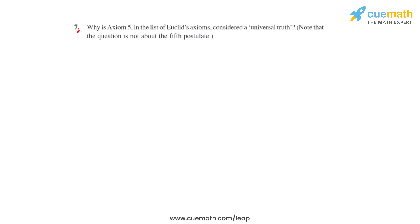Question number seven says: Why is Axiom 5 in the list of Euclid's axioms considered a universal truth? We have to note that the question is not about the fifth postulate. Before we solve this question, we have to understand what is Axiom 5.